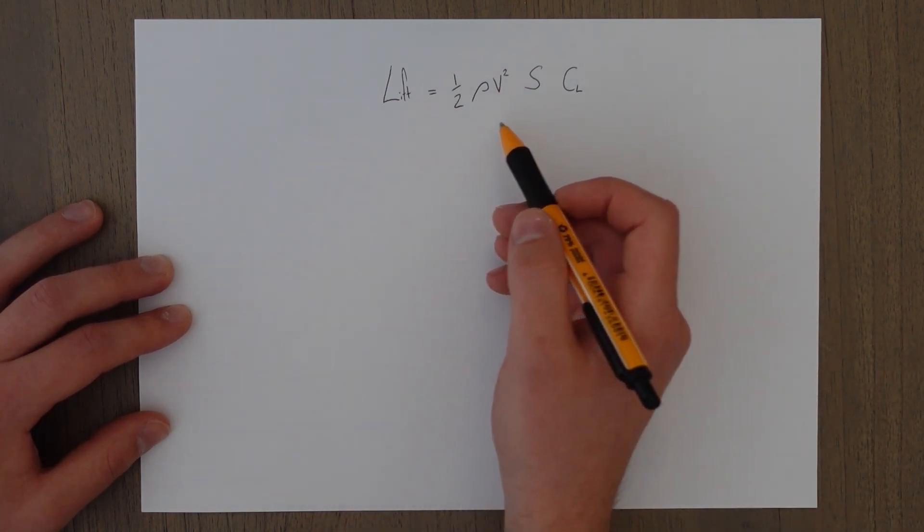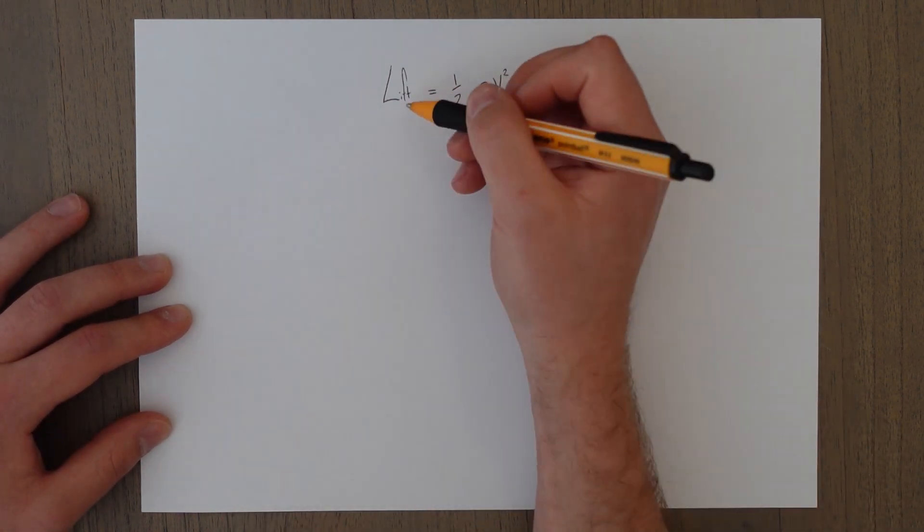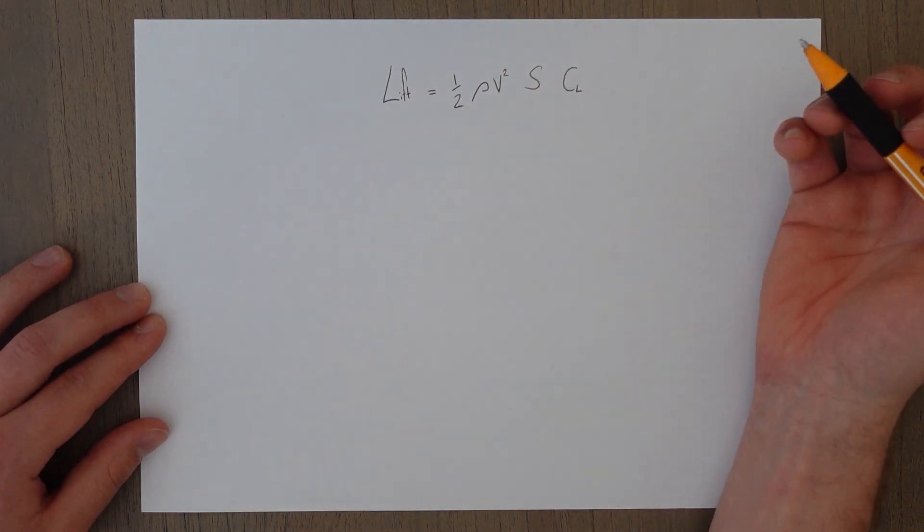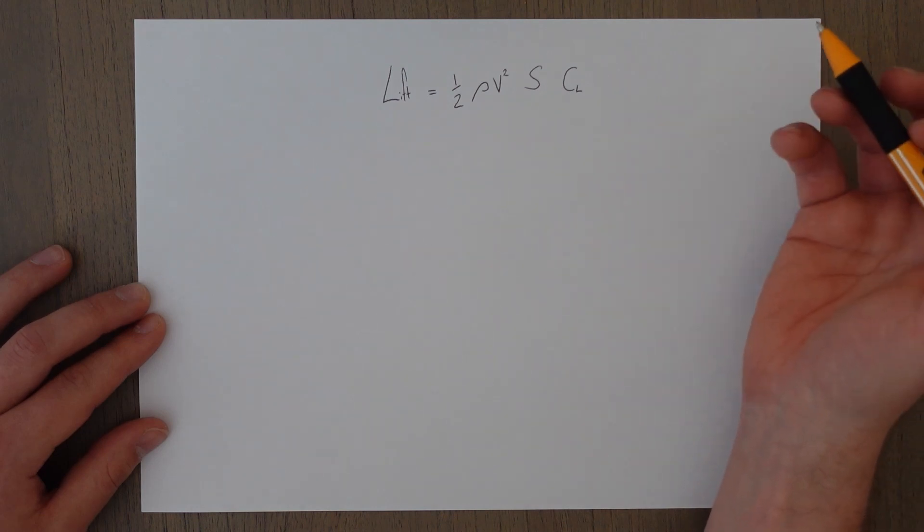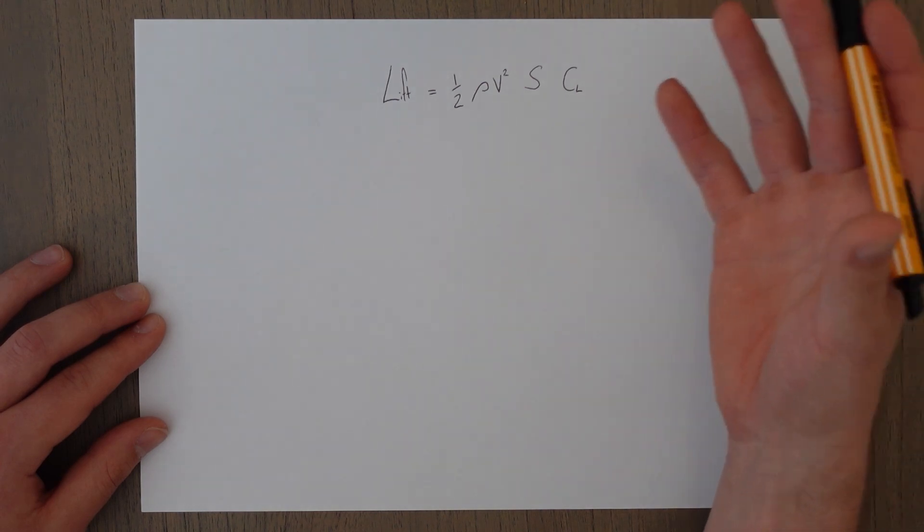So we can see lift equals a half rho v squared S CL. We need a lot of lift force for takeoff, so we're trying to maximize our lift because at takeoff we're at the heaviest weight we can possibly be for the whole flight. We're full of passengers, cargo, fuel, and we only burn fuel and become lighter during the flight.